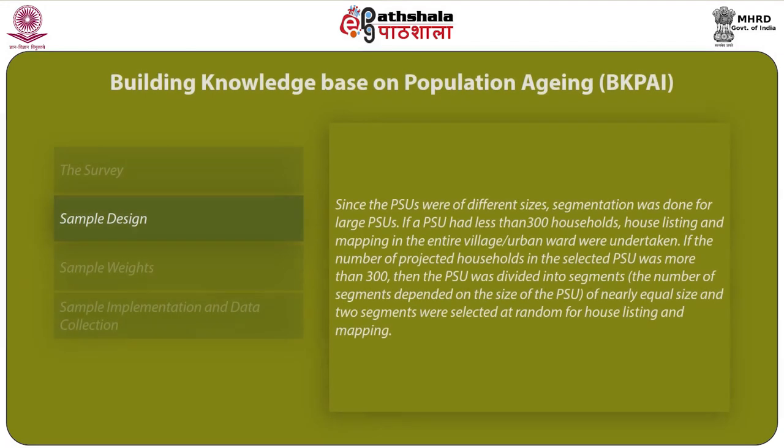Since the PSUs were of different sizes, segmentation was done for large PSUs. If a PSU had less than 300 households, house listing and mapping in the entire village or urban ward were undertaken. If the number of projected households in the selected PSUs was more than 300, then the PSU was divided into segments of nearly equal size and two segments were selected at random for house listing and mapping.